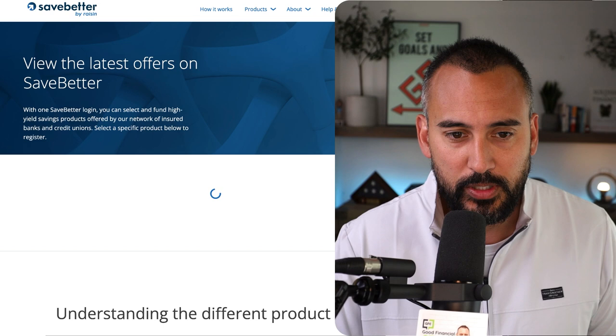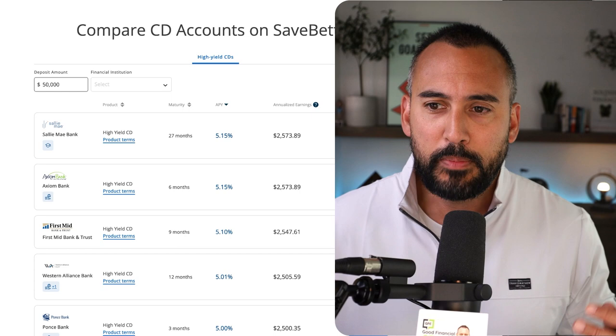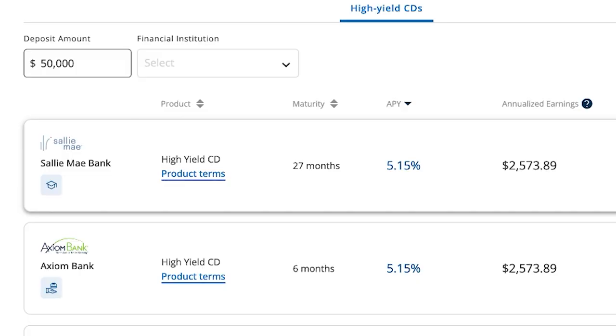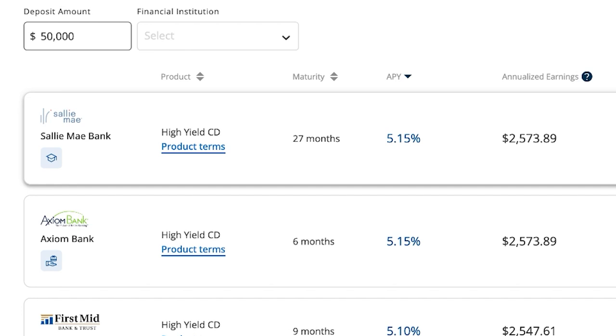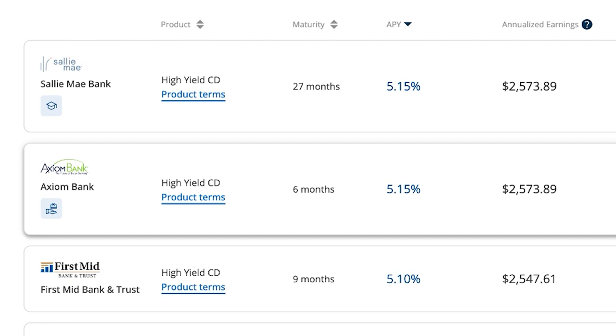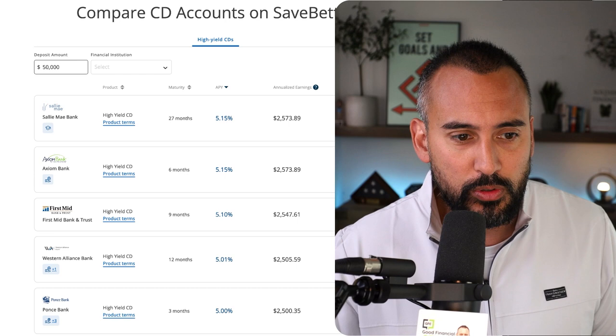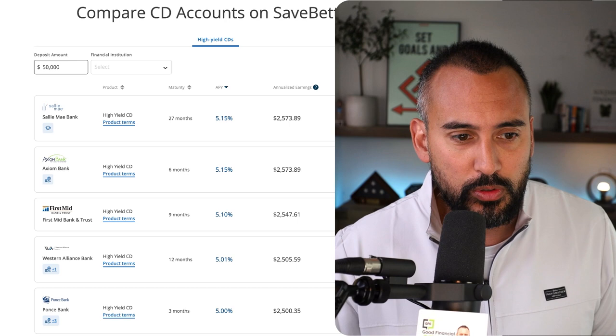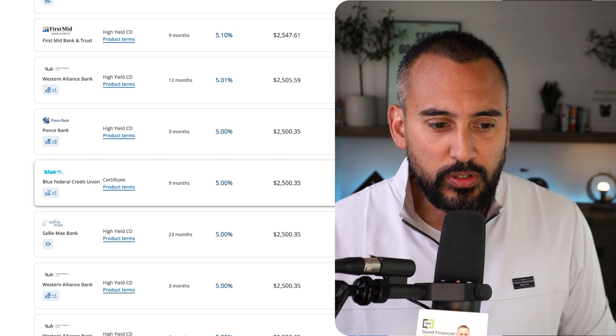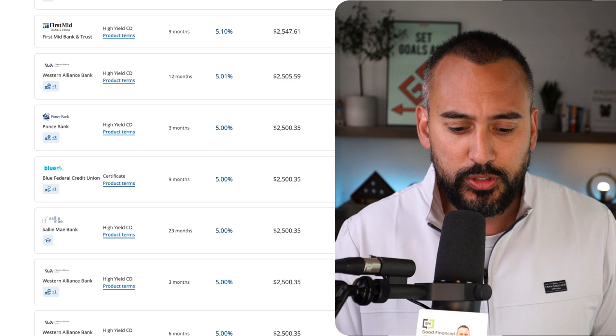So SaveBetter is an online platform that basically is a broker to different bank and different banking products. So they have savings accounts, money market accounts, bank CDs, which we're going to address here in a second, and other banking products. But just to look at the current top bank CDs, this is currently on SaveBetter's website. Their high yield CDs. We've got Sallie Mae Bank. It is a 27 month CD paying you 5.15%. Axiom Bank also paying 5.15%.